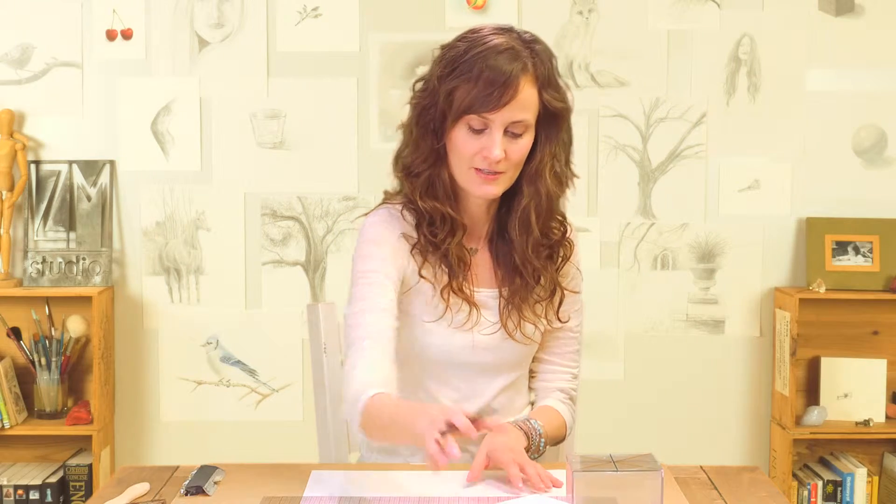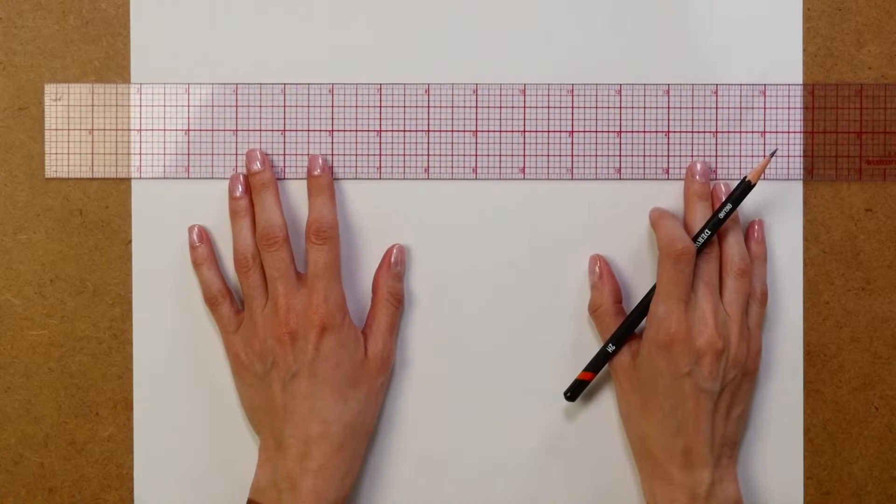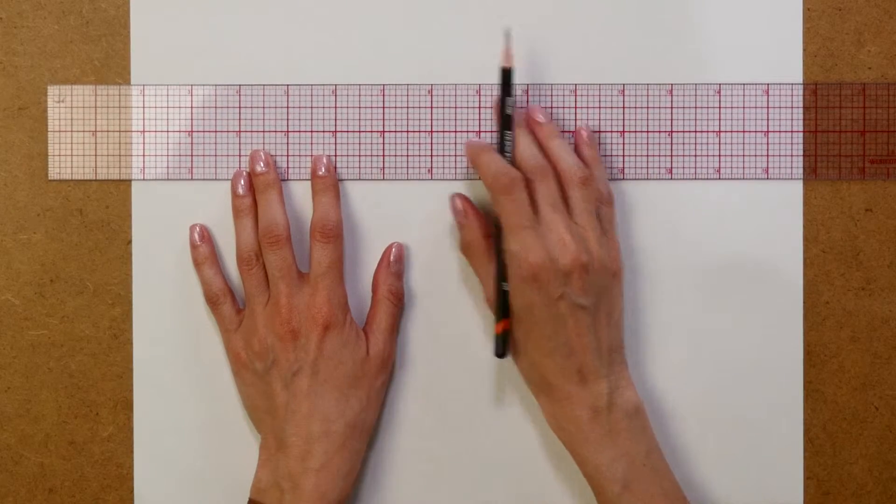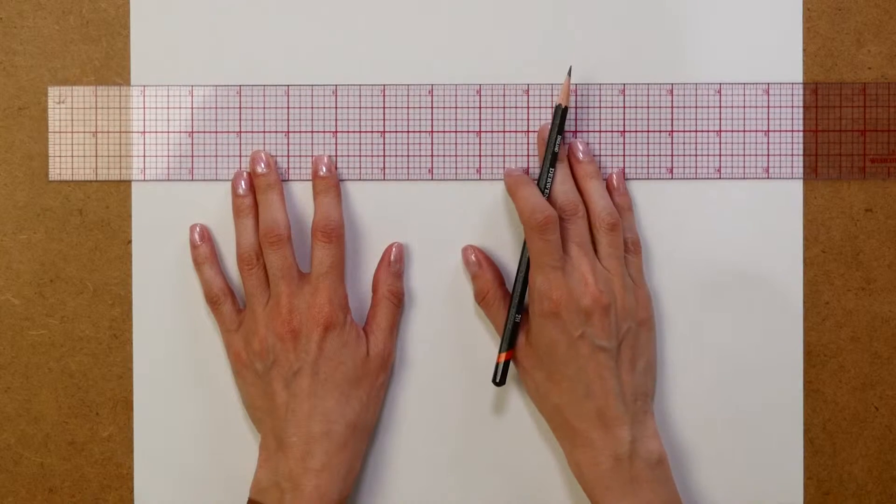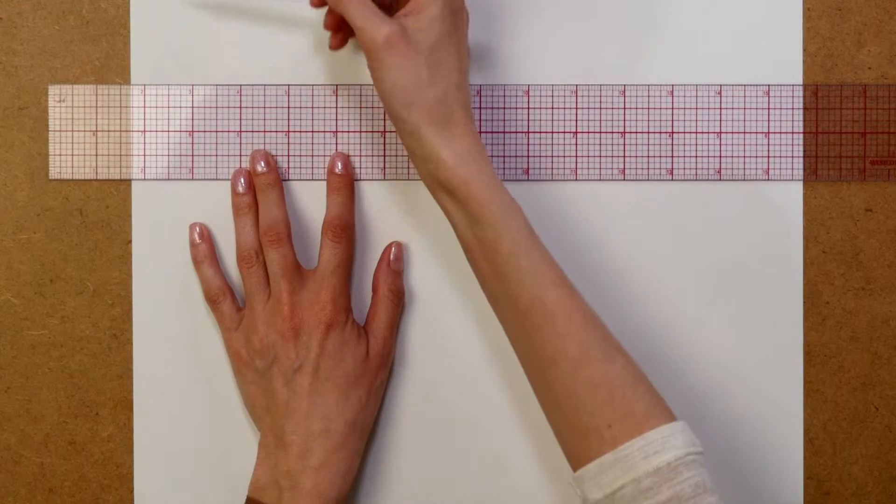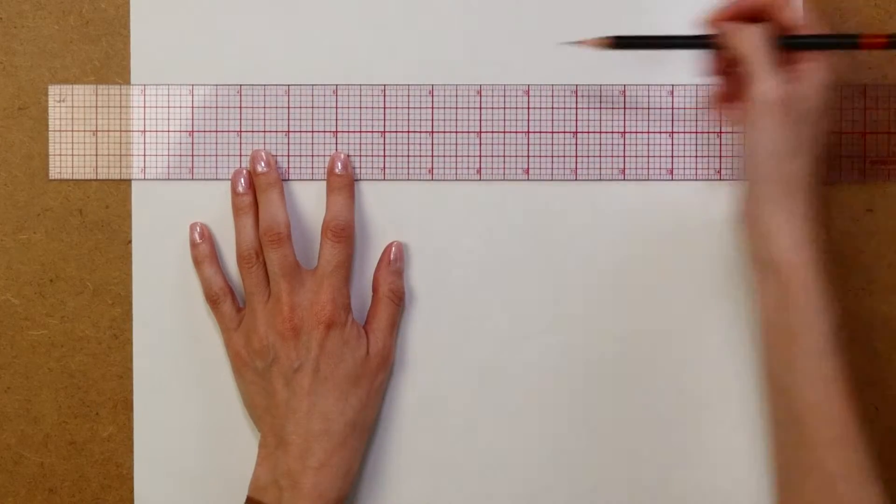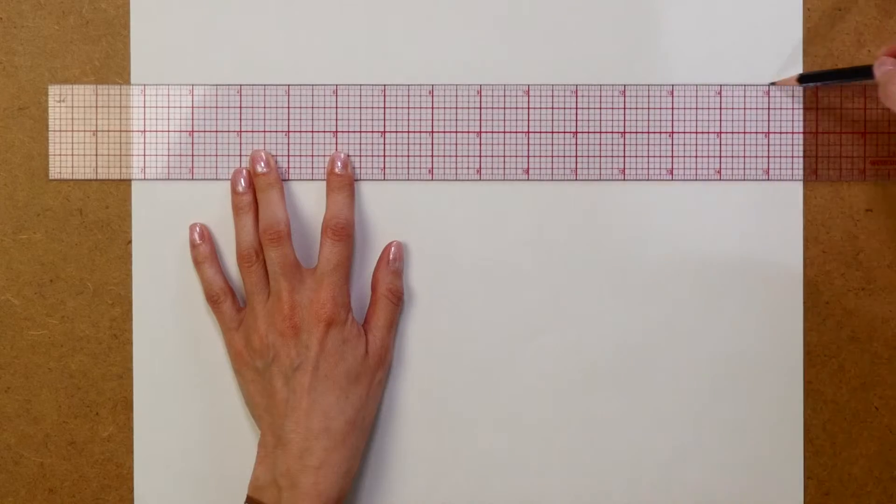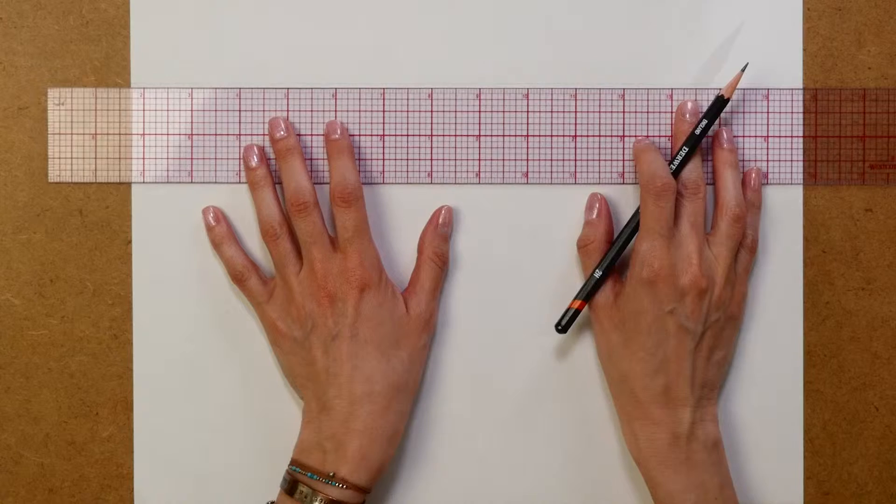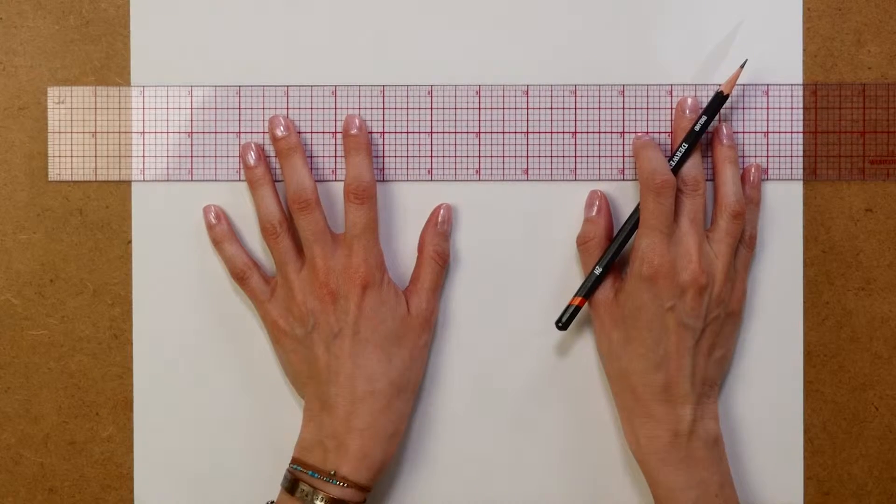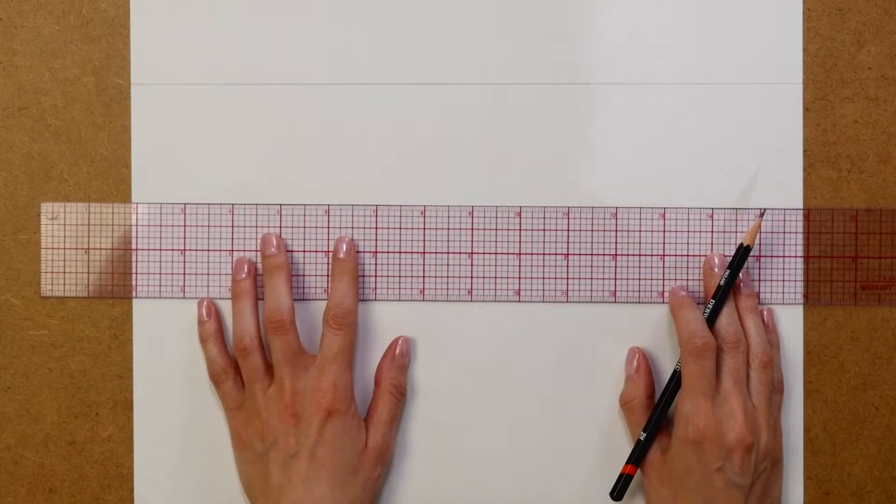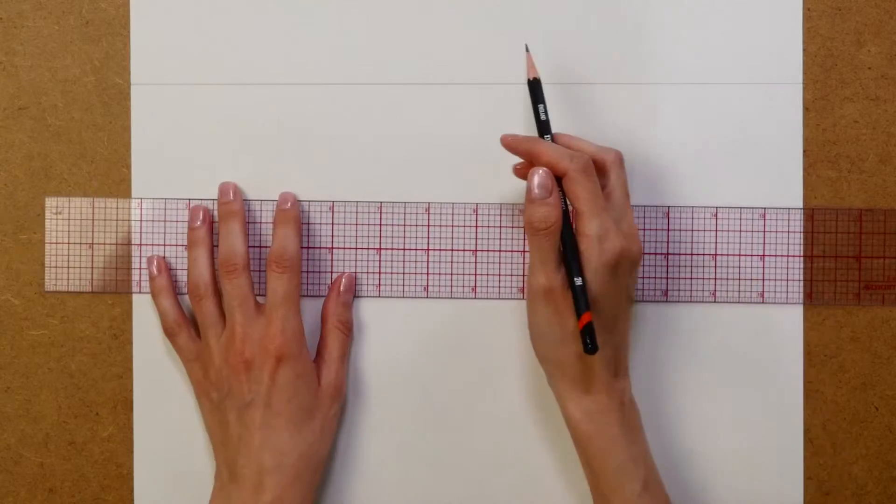The first step is to draw our horizon line. For this cube, I'm doing a bird's eye view, so I'll put the horizon line up at the top of the page. Make sure it's nice and horizontal. If you need to measure a couple sections to get it horizontal, do that. I'm going to do it a little bit darker so you can see it on camera. This is my horizon line.